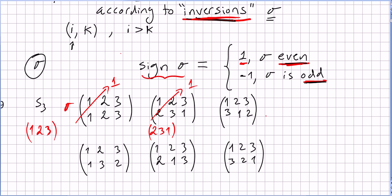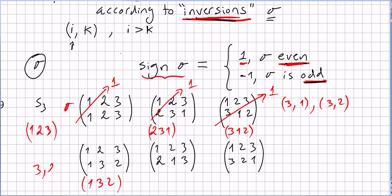What about the permutation three one two? The pairs of inversions are three before one and three before two — those are the only ones, since one has no smaller element to its right. So we have two inversions, an even number, and the sign of this permutation is one. What about one three two? The only inversion is three before two, since one has no smaller element to its right. We have an odd number of inversions, so the sign is minus one.